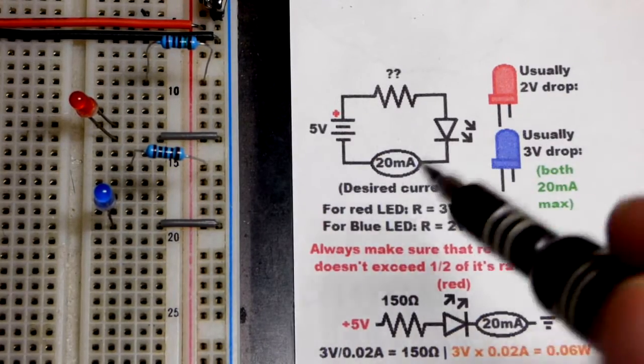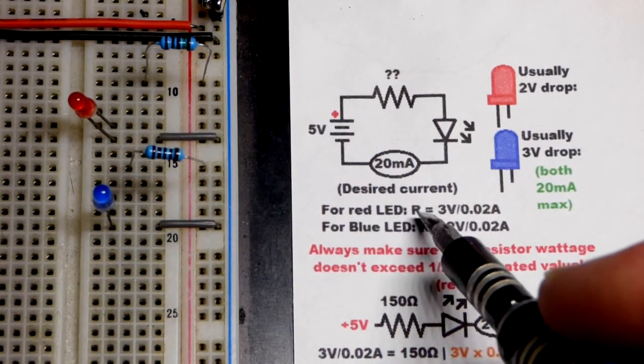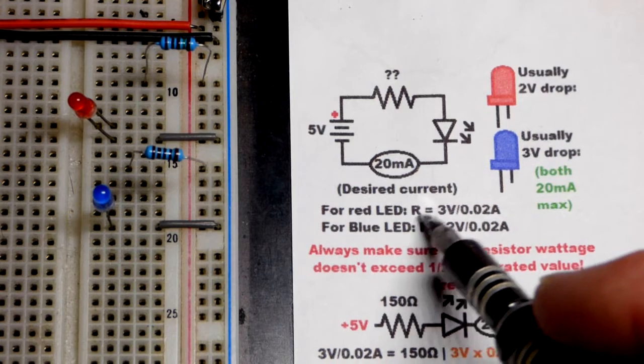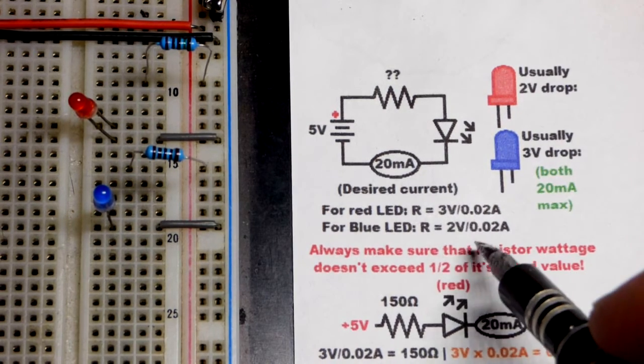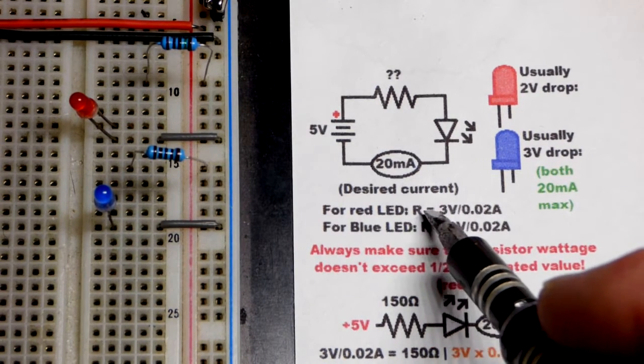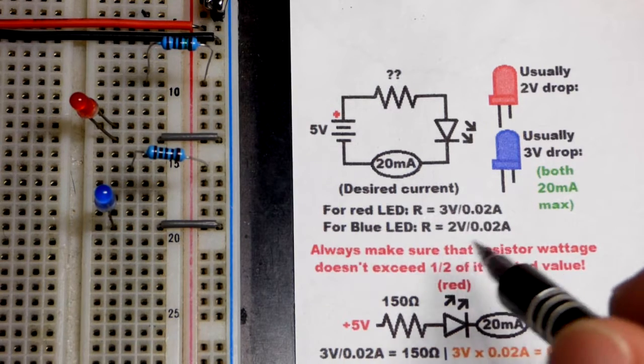So now in this video we're going to do an Ohm's law formula. It's R. The actual formula is R equals V divided by I. That's resistance equals voltage divided by current.